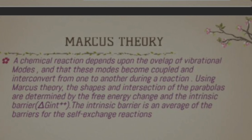In Marcus Theory, the actual chemical reaction depends on the vibrational mode overlap. The modes are coupled and interconvert — if overlapping occurs, coupling results, and one molecule in a reaction is converted into another molecule. In Marcus Theory, the shape and intersection of the parabolas determines the free energy change and intrinsic barrier. We use free energy change and the intrinsic barrier to determine the rate. The intrinsic barrier is the average barrier for the self-exchange reaction — that is, when an electron is exchanged with itself — and together with the free energy change, it is used to determine the rate.